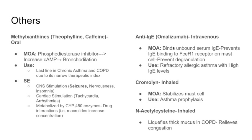Next is omalizumab, an anti-IgE monoclonal antibody given intravenously. It binds unbound serum IgE, preventing IgE from binding to mast cell receptors, thus preventing mast cell degranulation. It's used in refractory allergic asthma with high IgE levels — for example, patients with specific allergies to cats, dogs, or pollen where allergists can measure IgE levels.